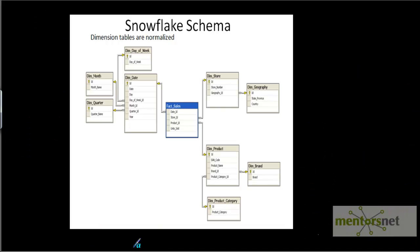We can see here an example of that. You have a sales table similar to the example we have seen before, except the dimension tables are normalized. Date dimension is split into quarter, month and day of the week, and store dimension is split into store and geography.